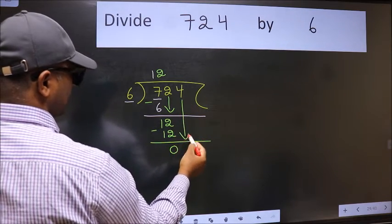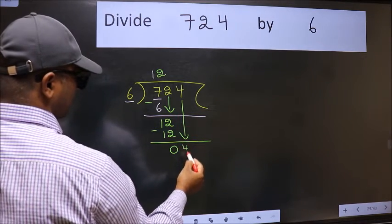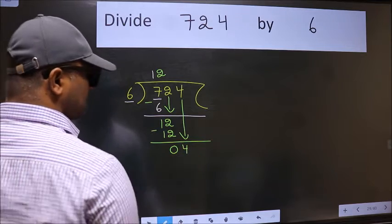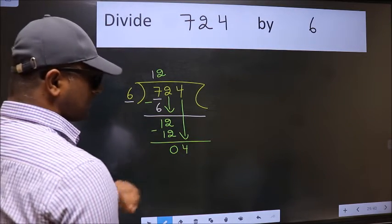After this, bring down the next number. So, 4 down. After this step, the mistake happens, and the mistake is this.